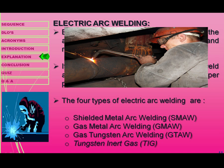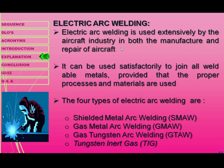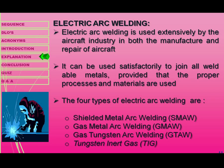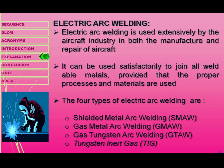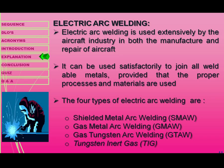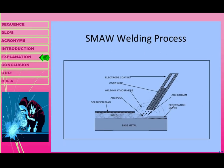Electric arc welding is used extensively by the aircraft industry in both the manufacture and repair of aircraft. It is utilized not only in the aircraft industry but also in automobile and other manufacturing industries. It can satisfactorily join all weldable metals provided the proper process and materials are used. The four types of electric arc welding are: Shielded Metal Arc Welding, Gas Metal Arc Welding, Gas Tungsten Arc Welding, and Tungsten Inert Gas welding.